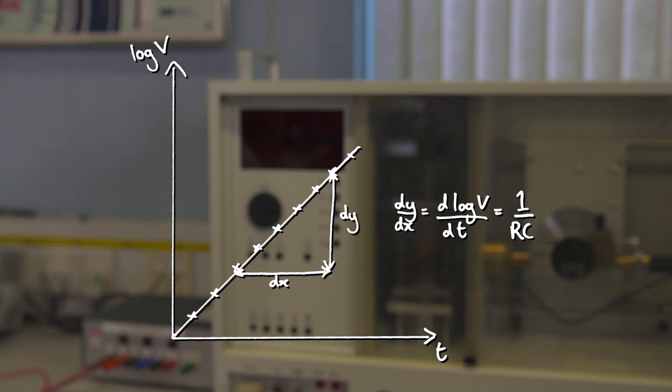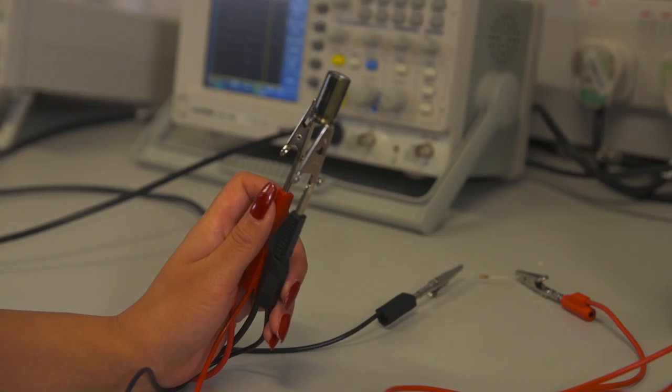Now with a charged capacitor, we're going to reverse the process and watch the capacitor discharge through a resistor.